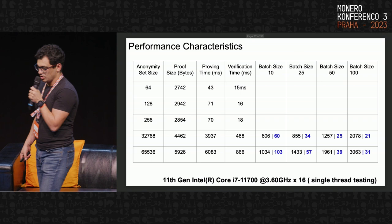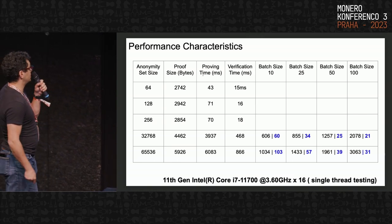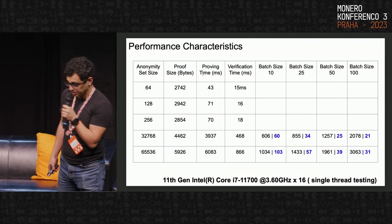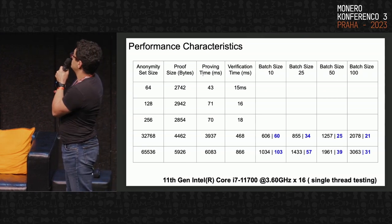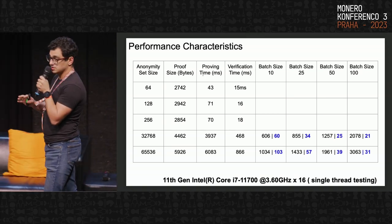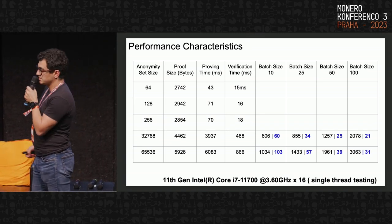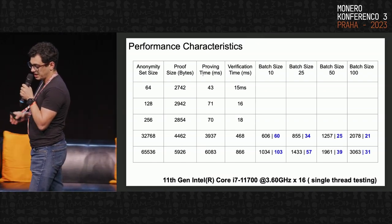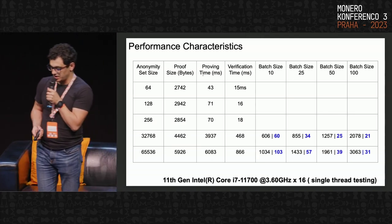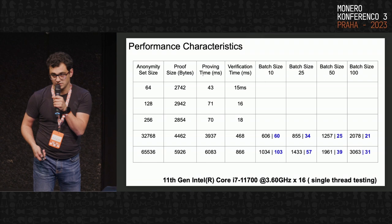This technique allows very optimized batch verification of transactions. Current benchmarks show that while keeping an anonymity set size of 65,000 coins, transactions will be about 6 kilobytes. The proving time takes about 6 seconds, and verification of a single transaction takes about 860 milliseconds. However, in a batch of 100 transactions, the marginal cost per transaction drops to about 31 milliseconds.